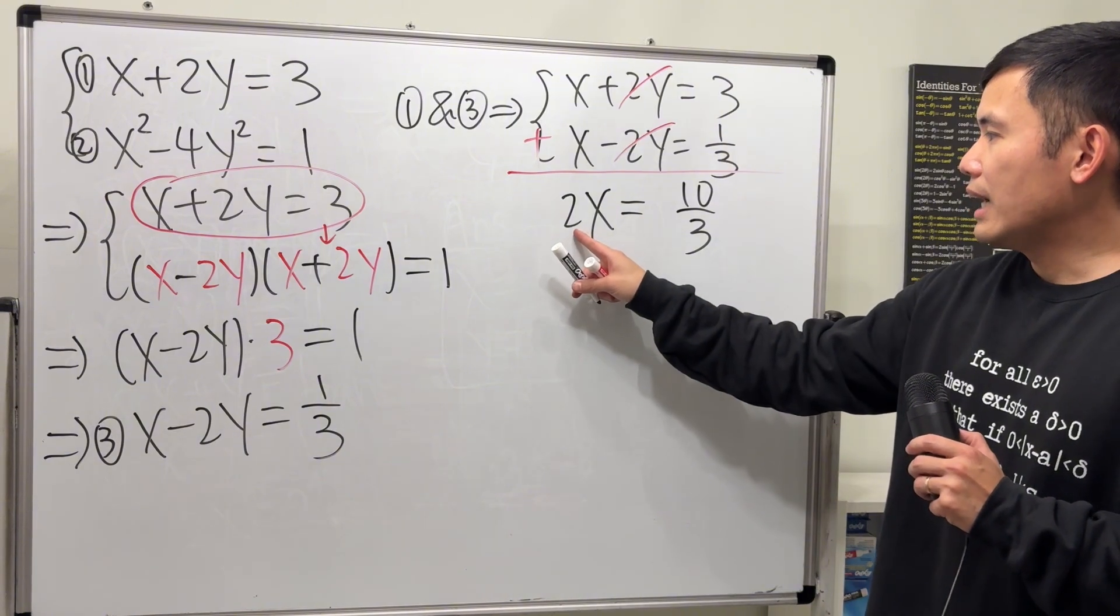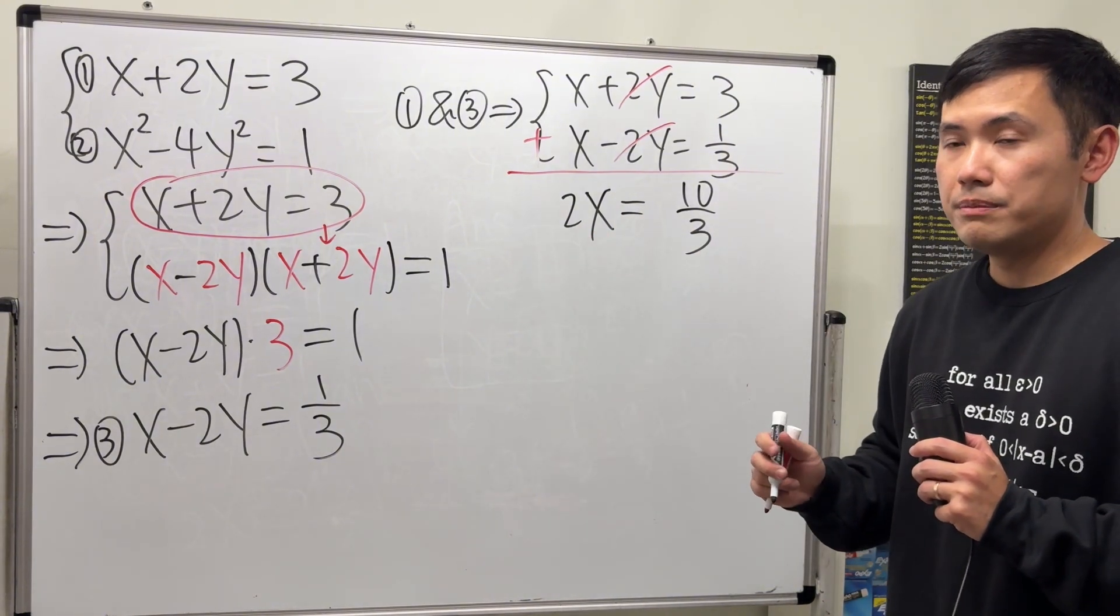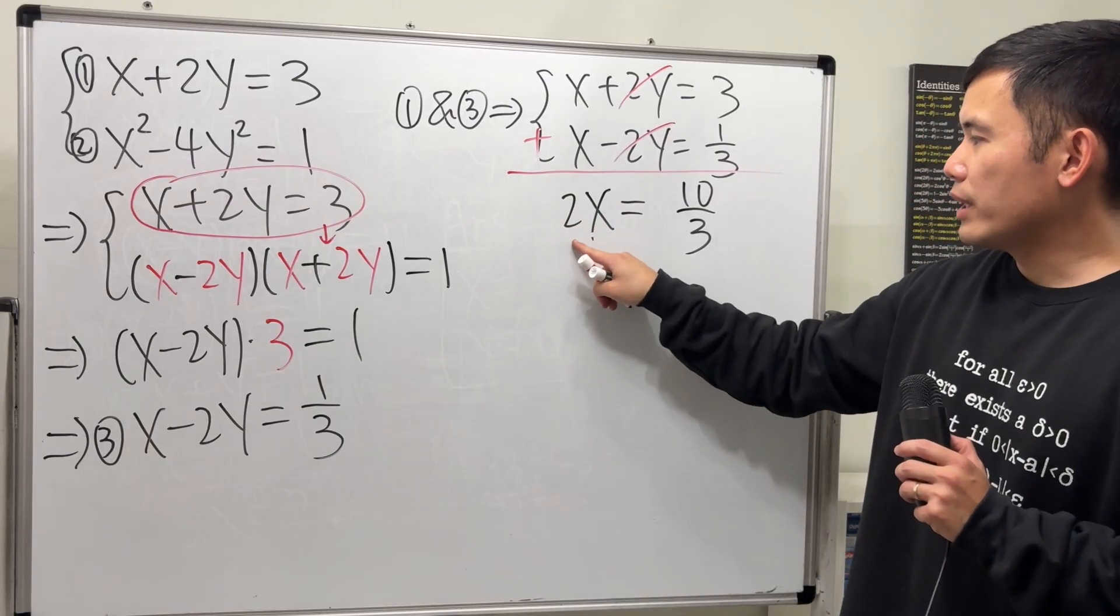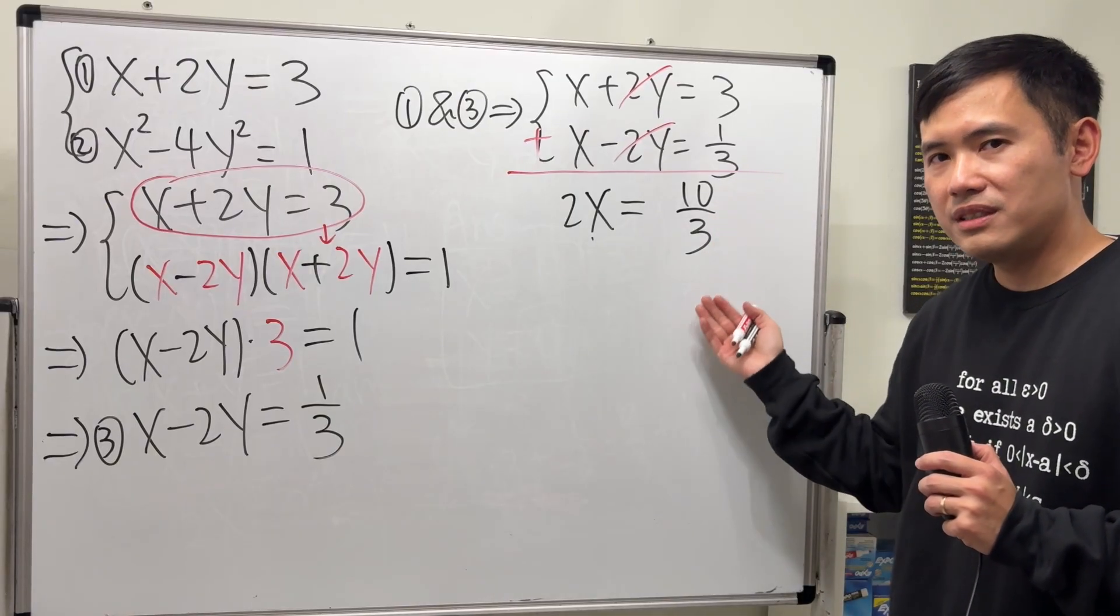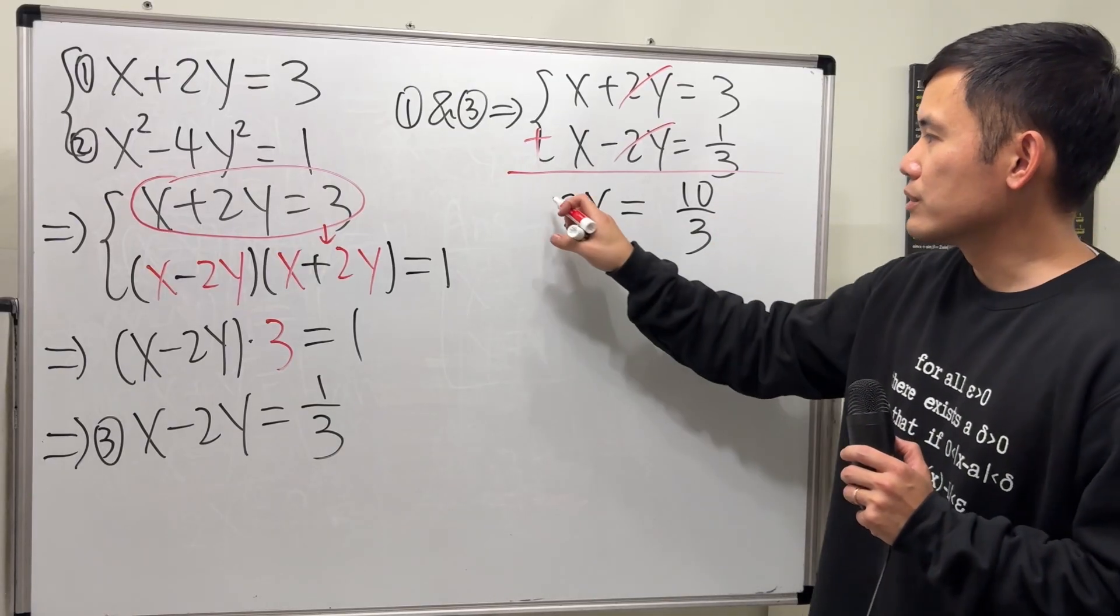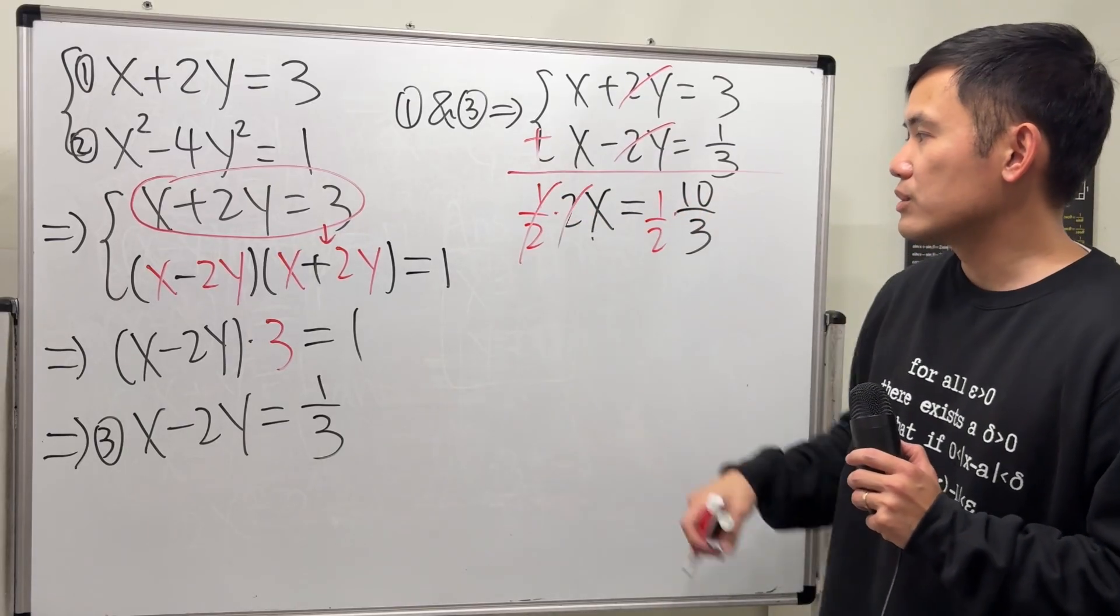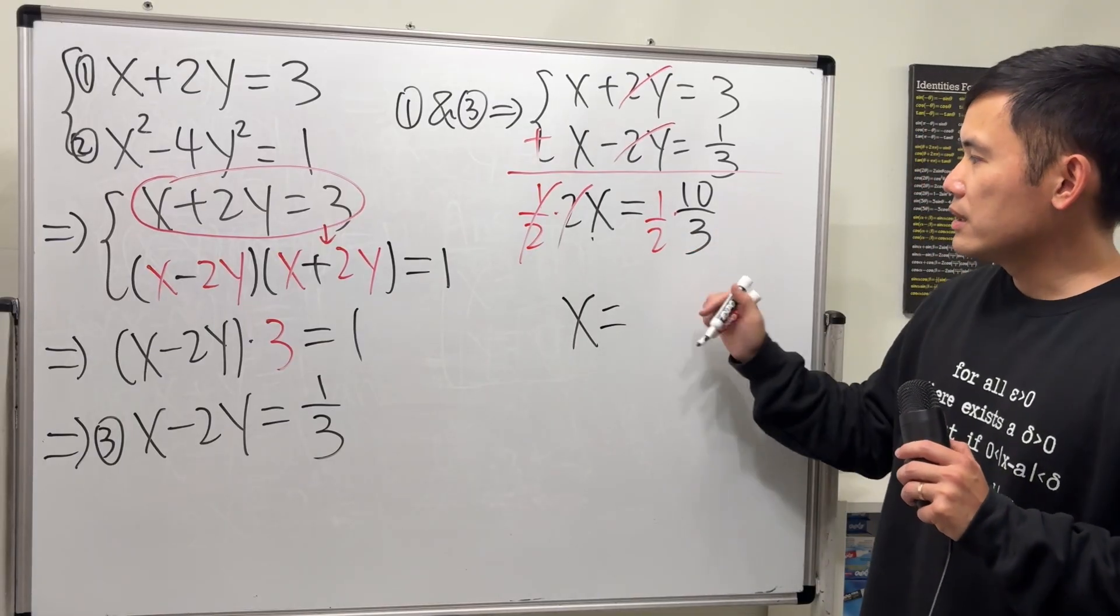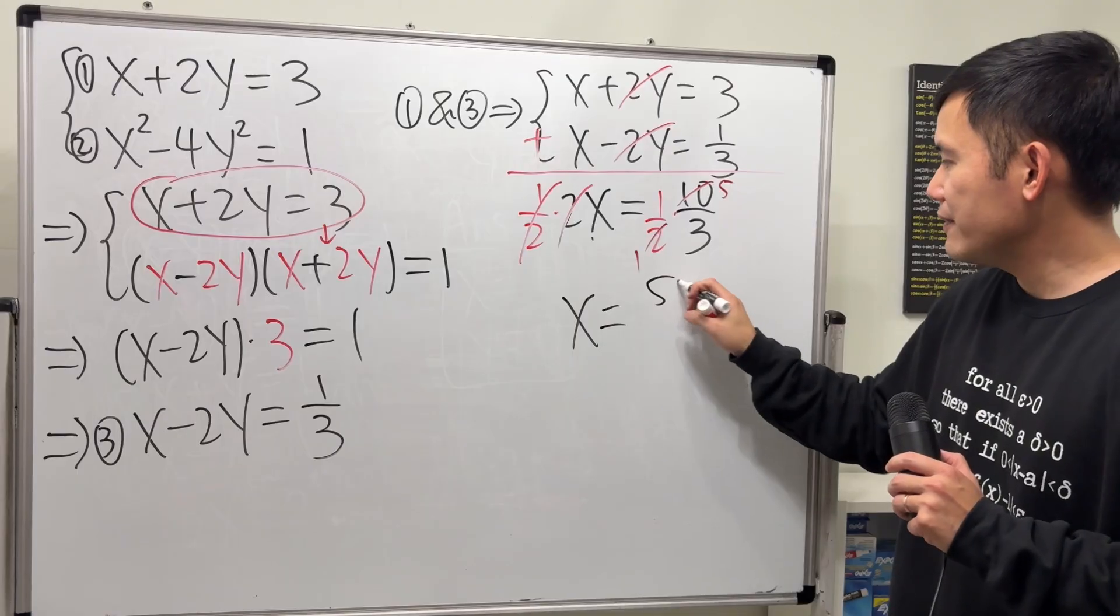Then, so here we have 2x equals 10 over 3. Well, I will divide both sides by 2. But usually if I write it as over 2, that doesn't look that nice because we will see a complex fraction. I'm just going to write it as multiply by 1 half to both sides. So this and that cancel. And then we get x equals, 2 and 10 can be reduced, right? So there's 1 and 5. So we get 5 over 3.